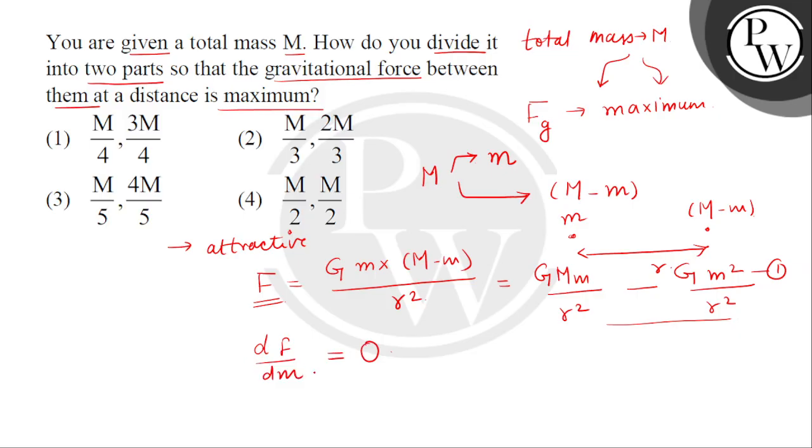So, this is first derivative test. So, we'll differentiate equation 1 both sides with respect to small m. So, on the left side we'll get d by dm of f, this equals to right side. We take the constants outside. So, it is constant. So, inside the bracket this is d by dm of M minus d by dm of m square. Here r square will come.